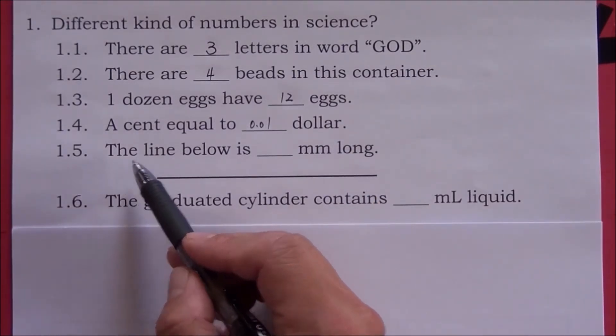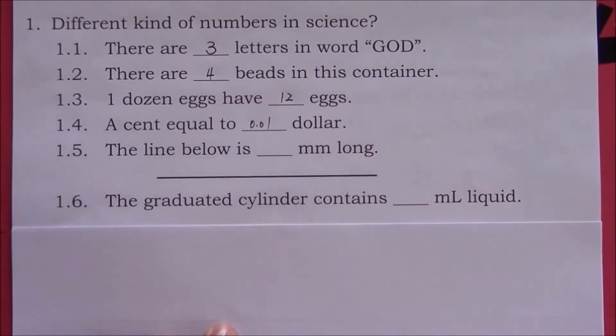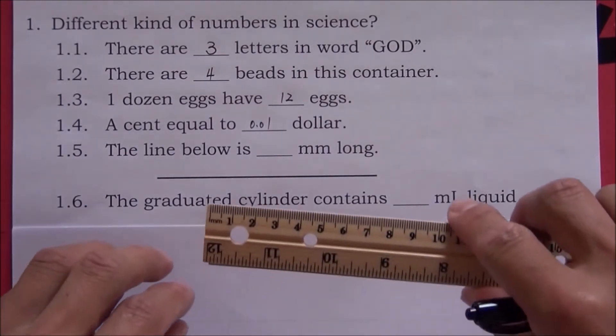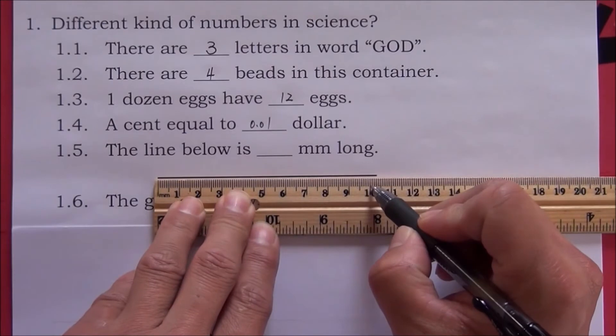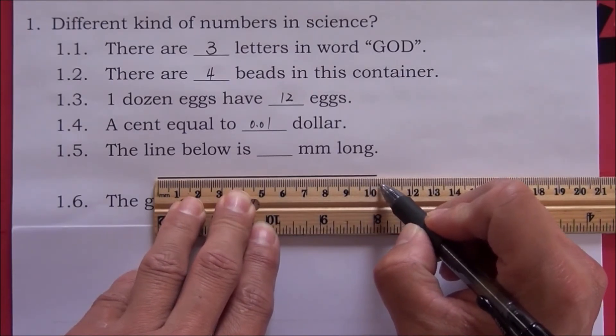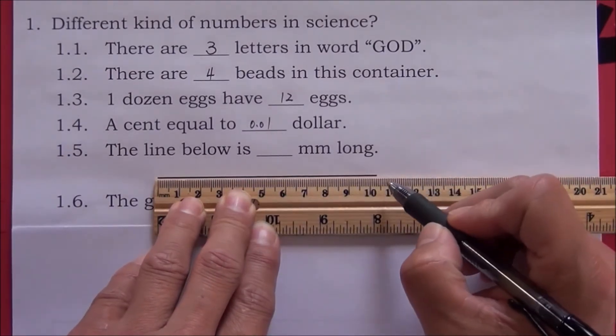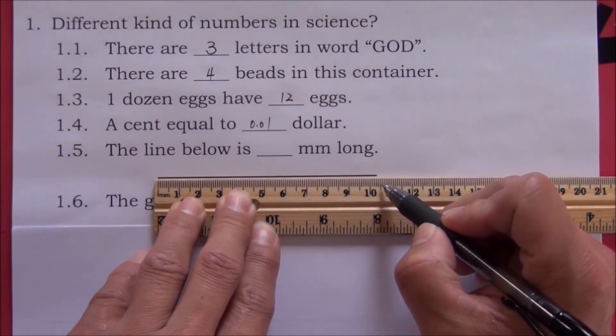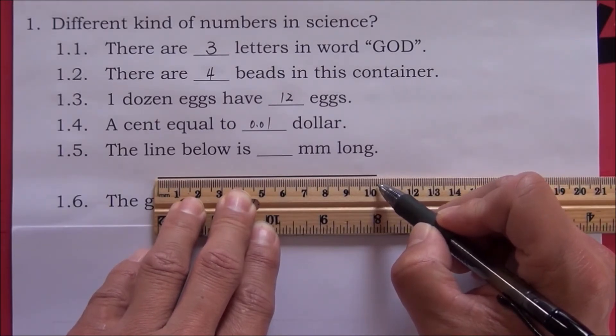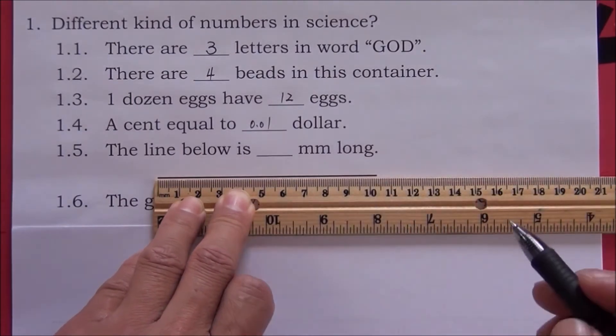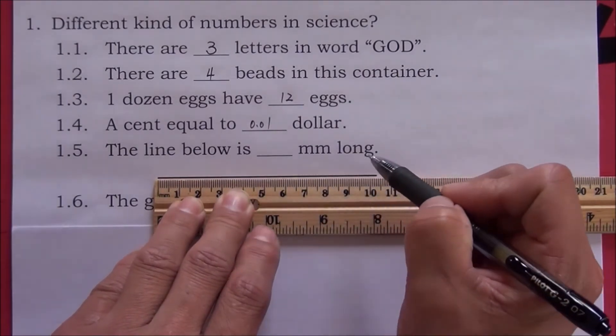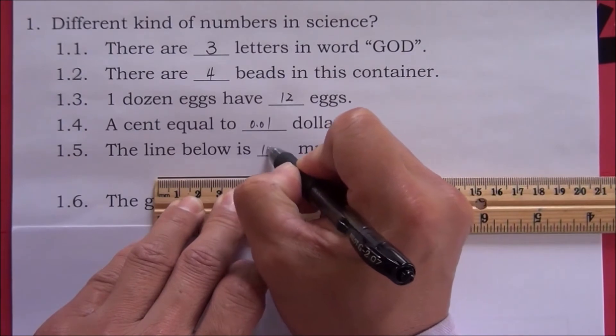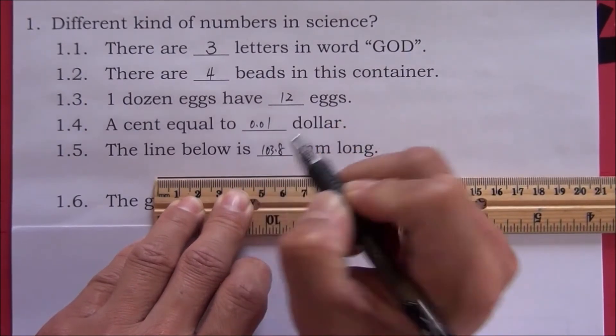Number five: The line below is how many millimeters long? We have to use a ruler to take a measurement. From my best estimate, this line is 10.1, .2, .3, between 10.3 and 10.4 centimeters. I think it is closer to 10.4 than to 10.3. So my best estimate is 10.38 centimeters long. But I want millimeters, so it is 103.8 millimeters long.